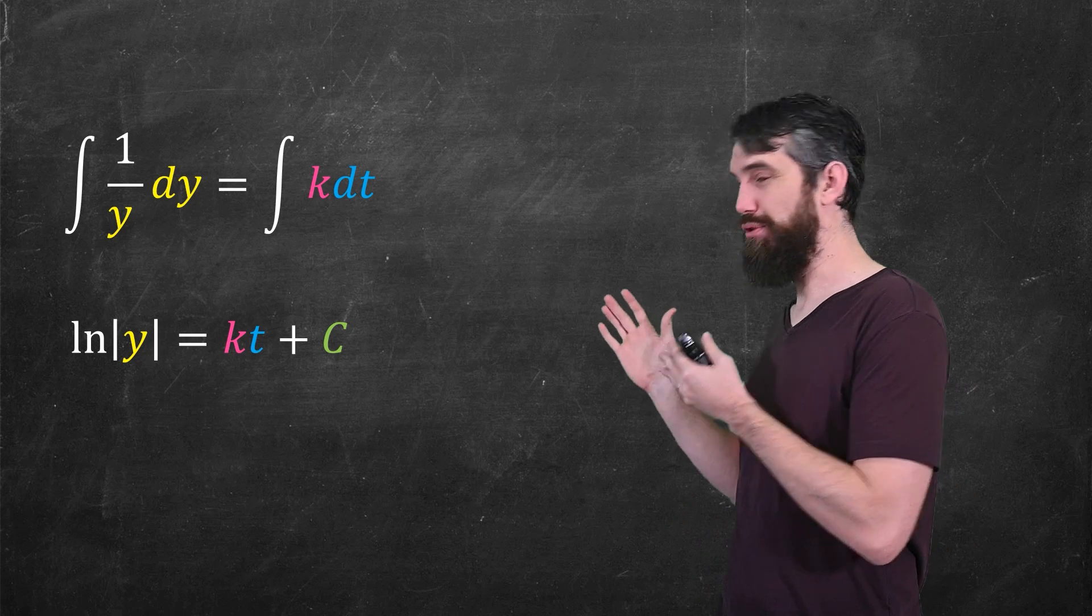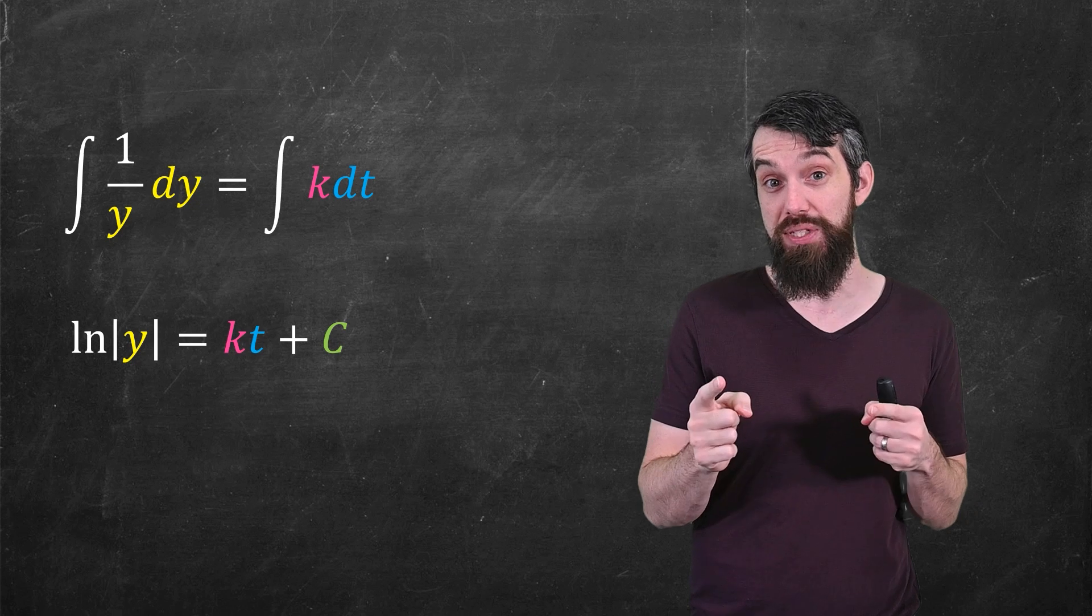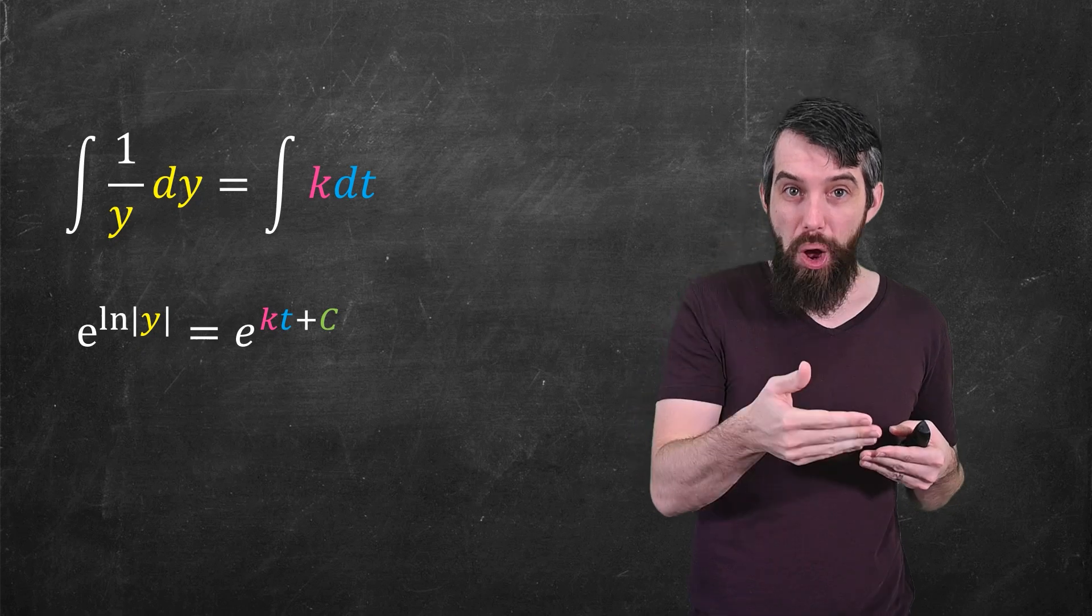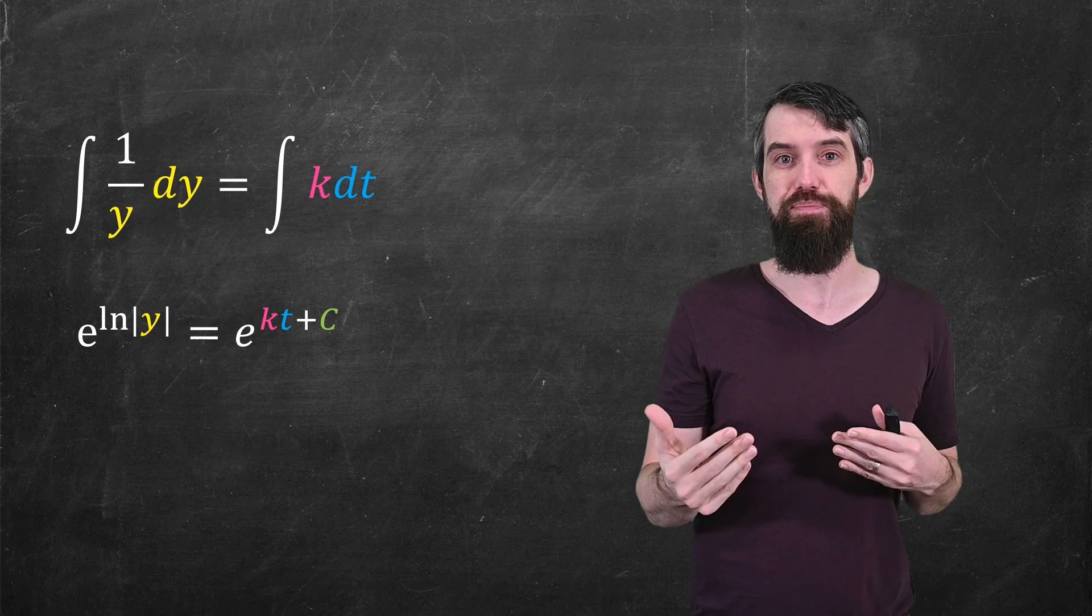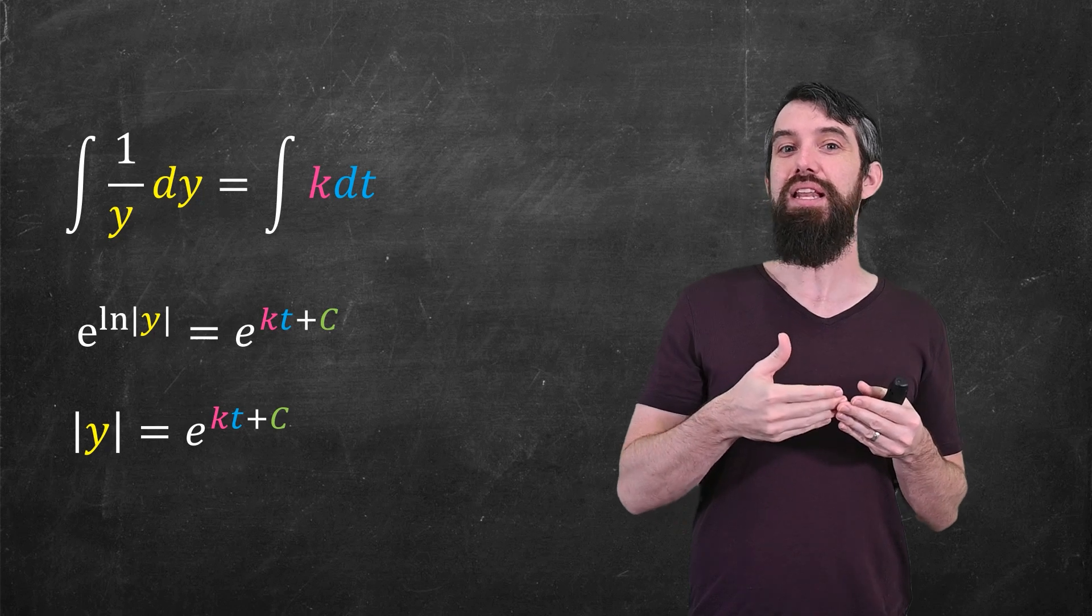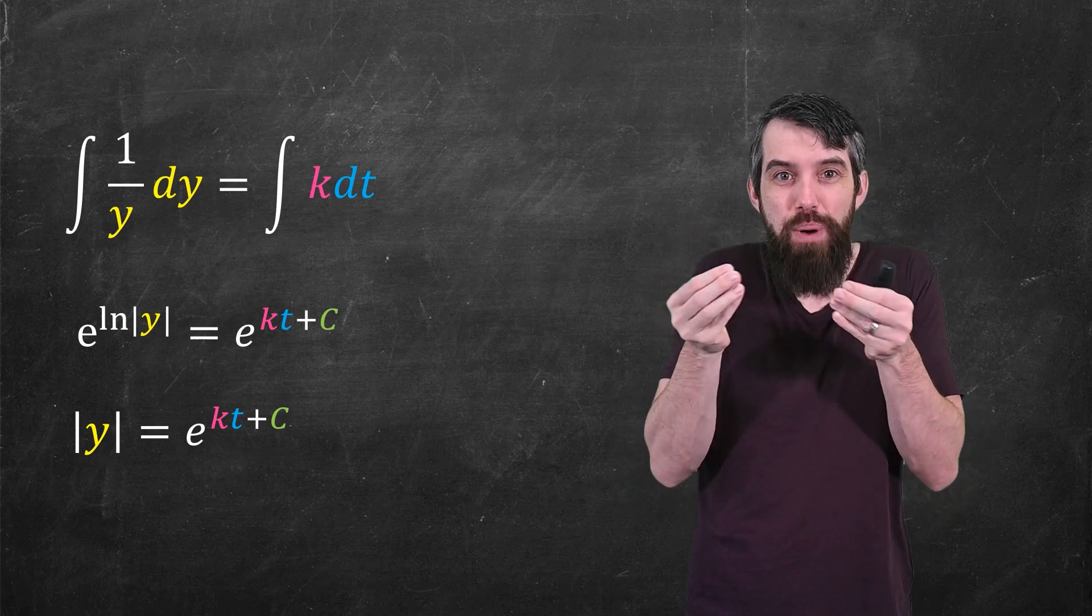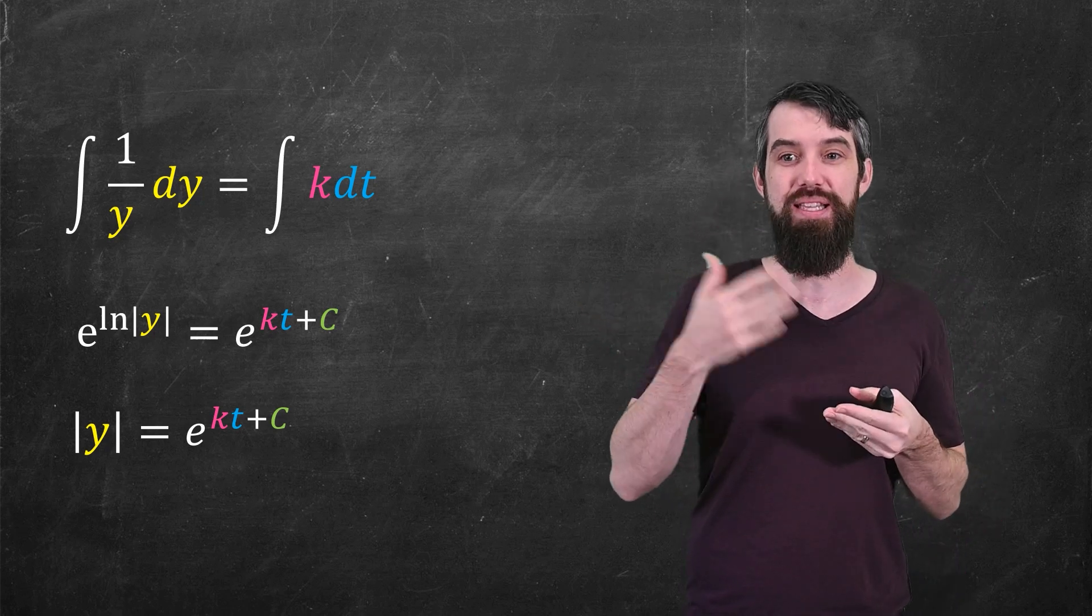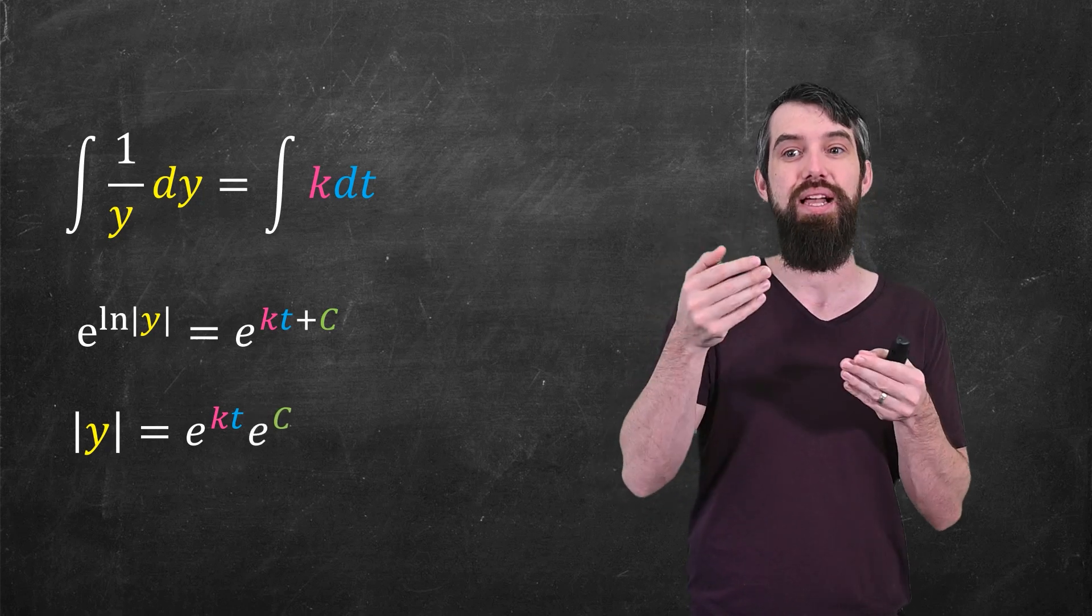Okay, so we have a solution here, and we actually can solve it a little bit better. I'm going to take e to the power of both sides, which is going to get rid of the logarithm. So on the left, e to the logarithm of absolute value of y, that's just going to cancel to become absolute value of y. And then the same thing on the right.